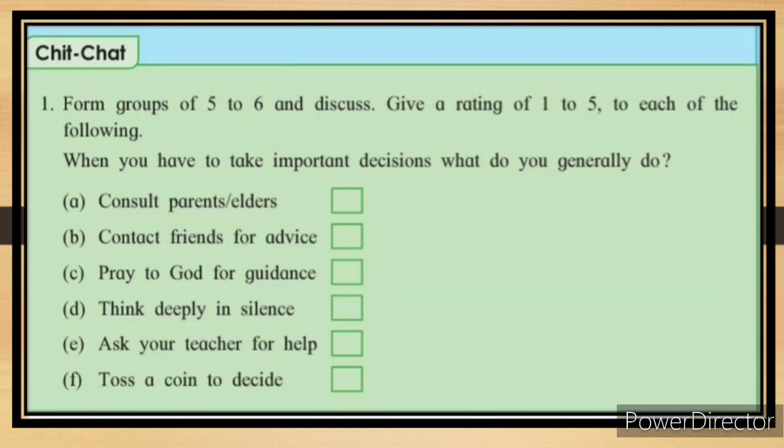Chit Chat: Form groups of five to six and discuss. Give a rating of one to five to each of the following. When you have to take important decisions, what do you generally do?